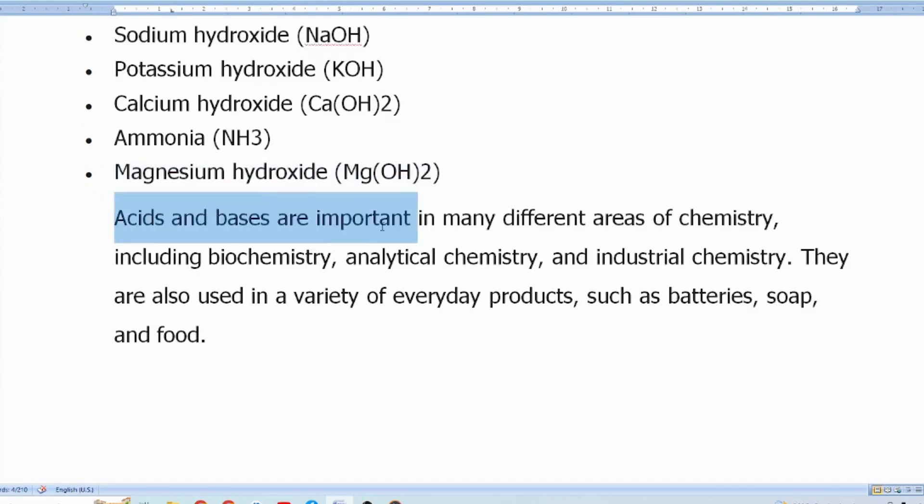Acids and bases are important in many different areas of chemistry, including biochemistry, analytical chemistry, and industrial chemistry. They are also used in a variety of everyday products, such as batteries, soap, and food.